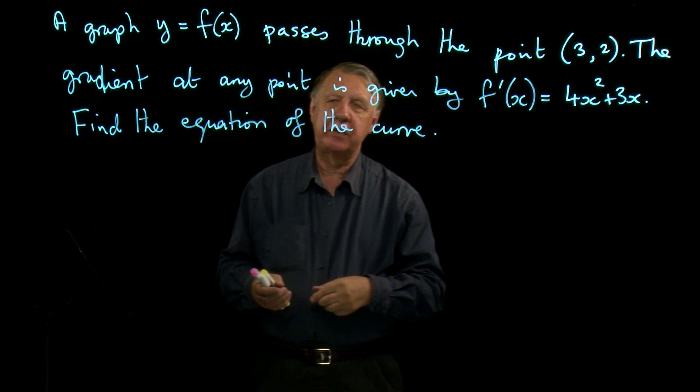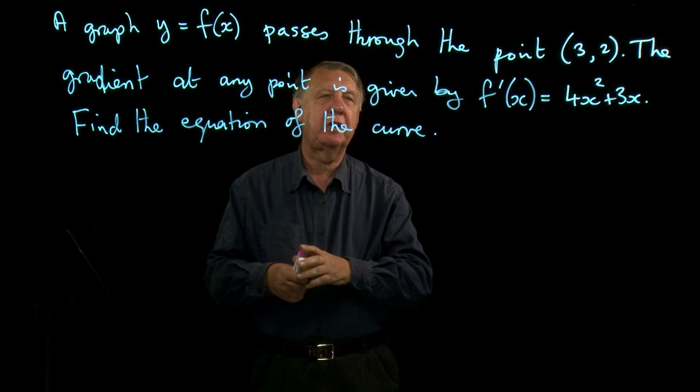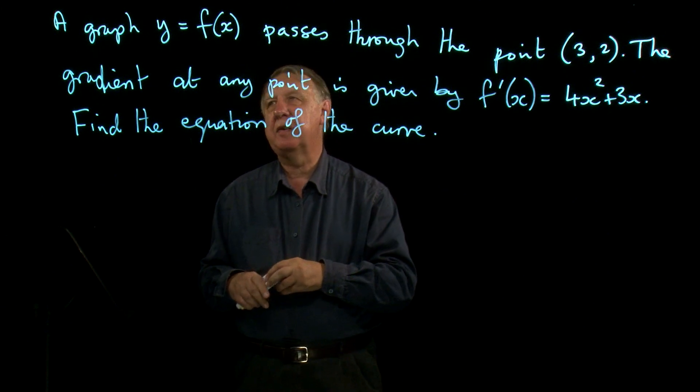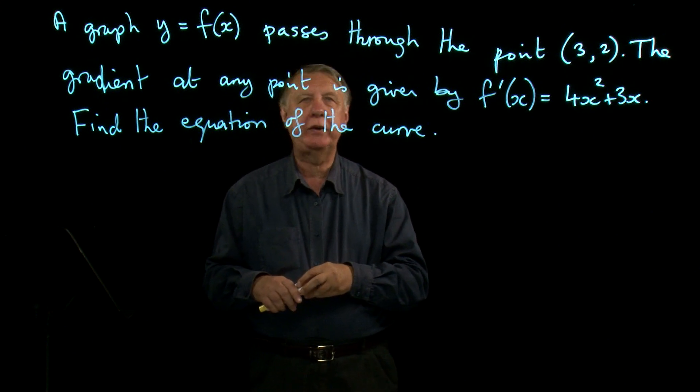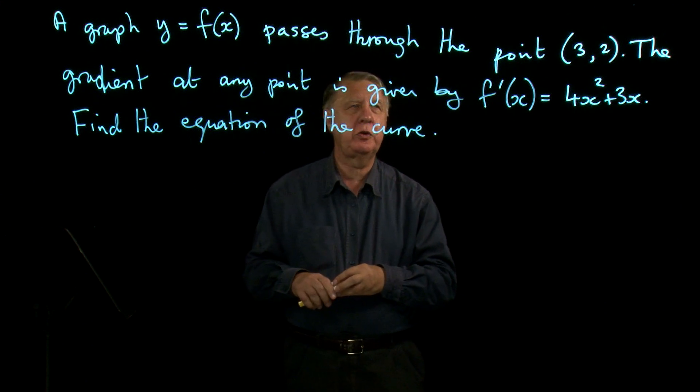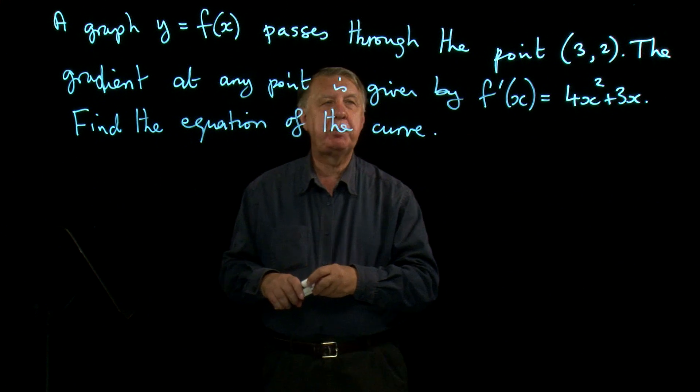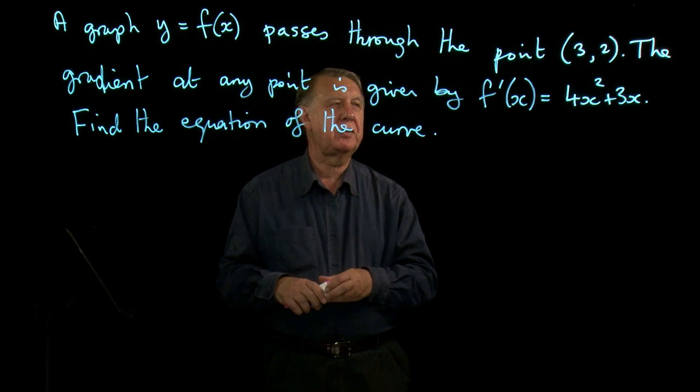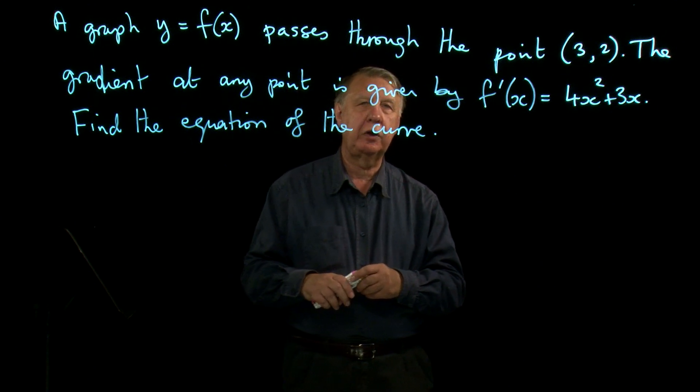You may have noticed the title to this lesson is Basic Differential Equations. I want you to read carefully the question that's here in front of us. A graph y equals f(x) passes through the point (3,2). The gradient at any point is given by f'(x) equals 4x² plus 3x. Find the equation of the curve.